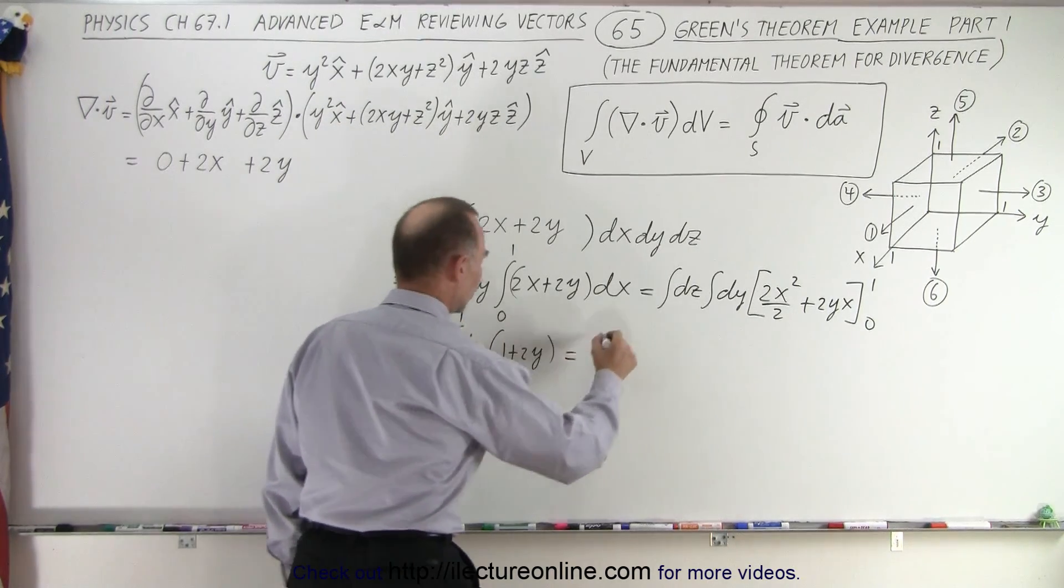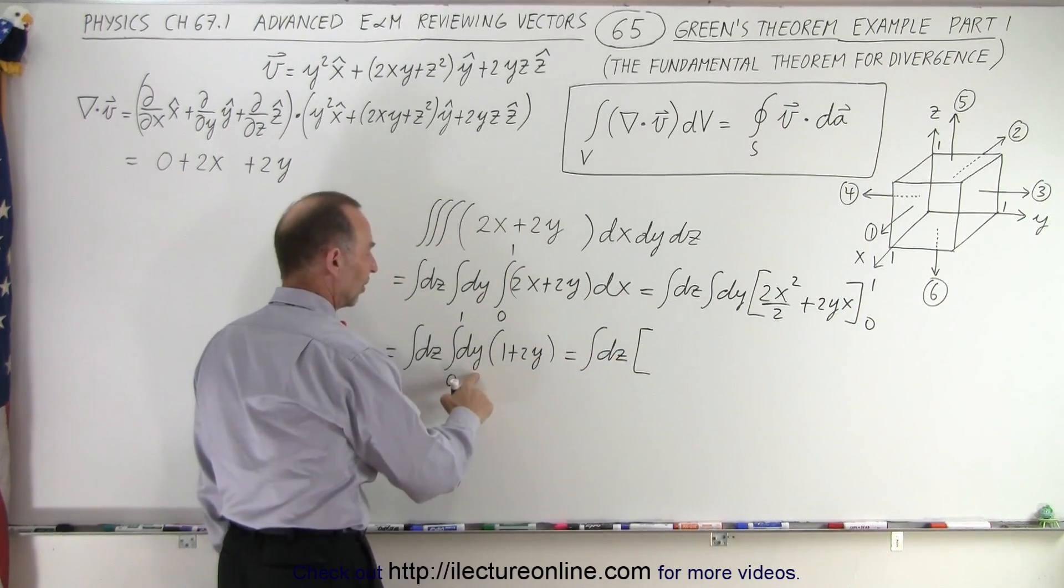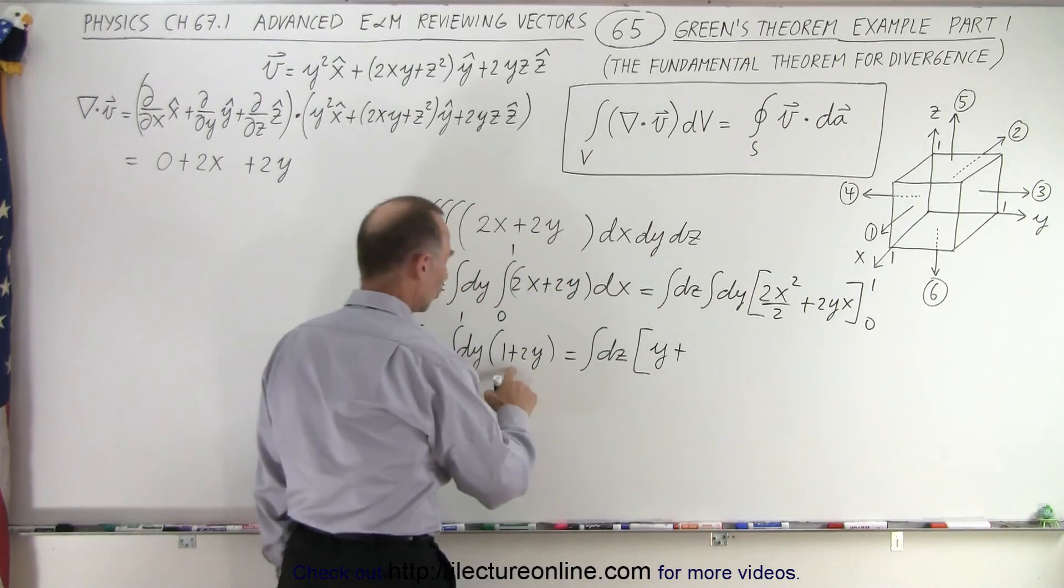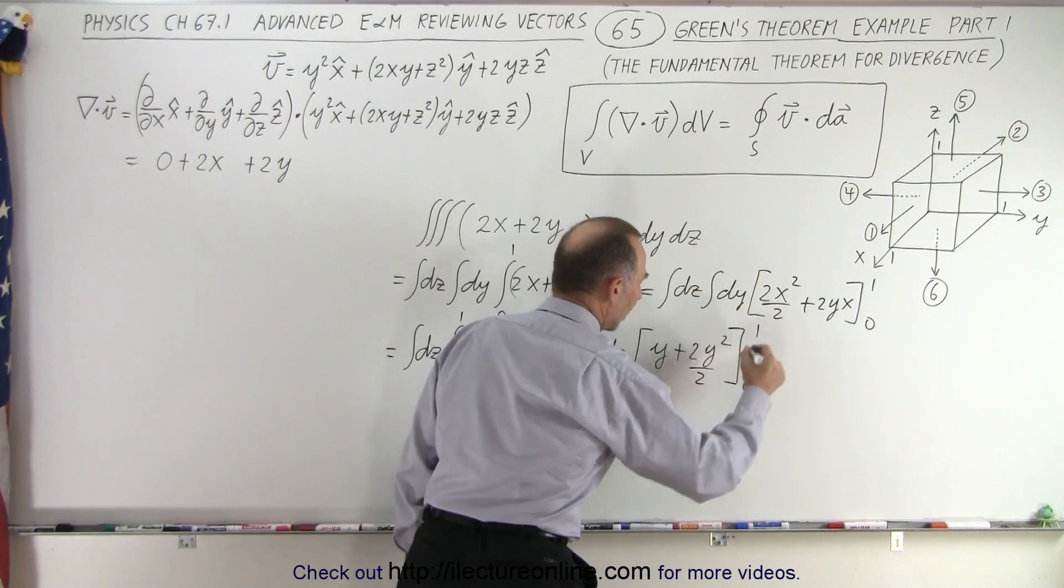So this is going to be equal to the integral over dz times, when we integrate this relative to the variable y, we get y plus 2y squared over 2, again evaluated from 0 to 1.